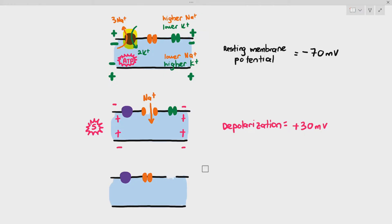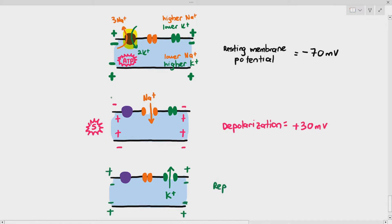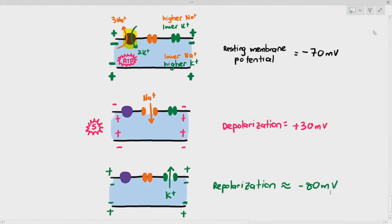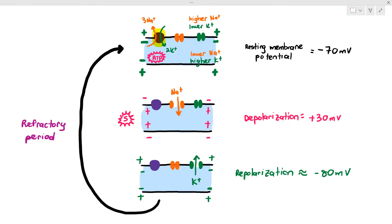Depolarization only happens for a short amount of time, because once it reaches positive 30 millivolts, the sodium ion channel will close and the voltage-gated potassium ion channel opens, and thus potassium ions rush out. Then it kind of hyperpolarizes, going beyond negative 70 millivolts, but after a while it will return back to normal. The period when it returns back to normal after the hyperpolarization is called the refractory period.